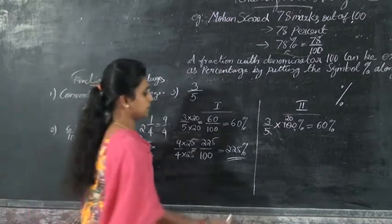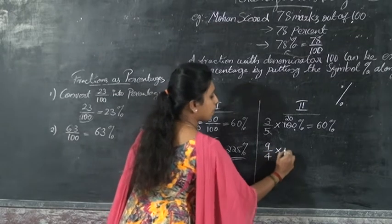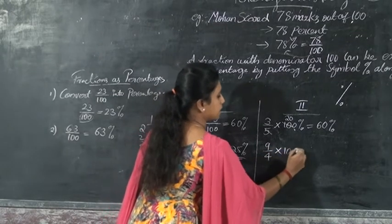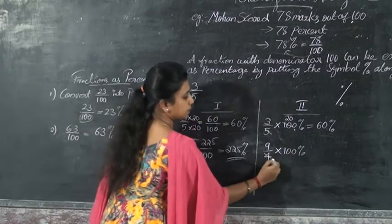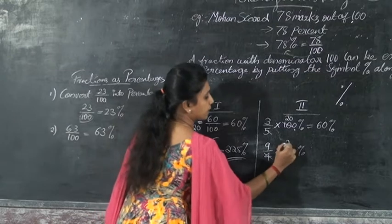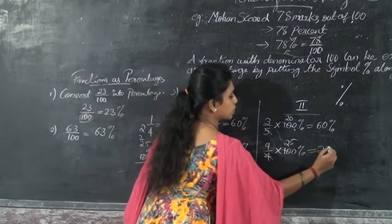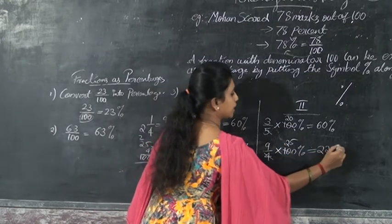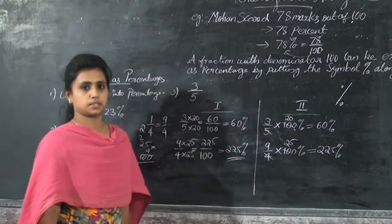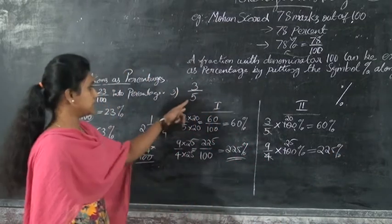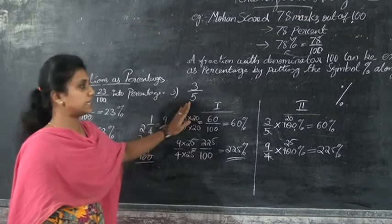The second method is 9 by 4 multiplied by 100 percent. 100 divided by 4 is 25, and 25 times 9 is 225. So the answer is 225 percent. You can follow either method to convert this type of fraction.